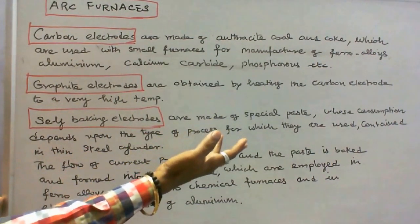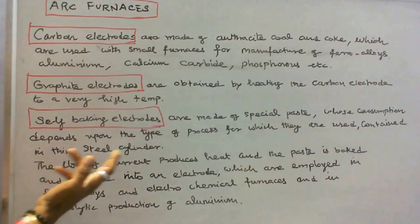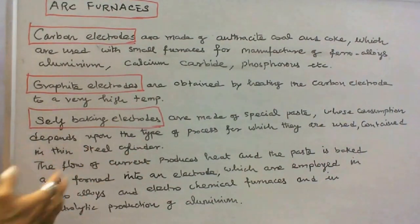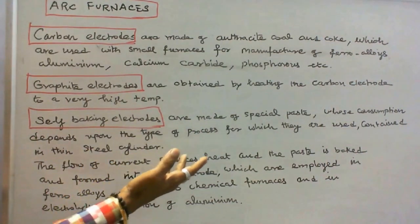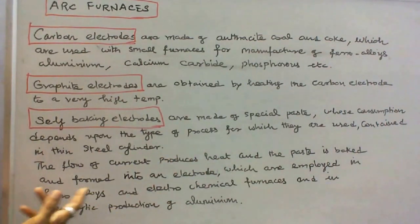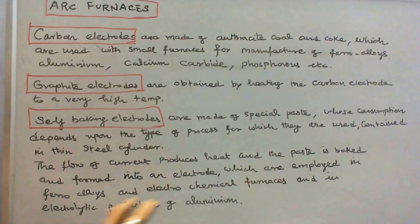For which they are used, contained in thin steel cylinder, the flow of current produces heat and the paste is baked and formed into an electrode which are employed in ferro alloys and electrochemical furnaces and in electrolytic production of aluminum.